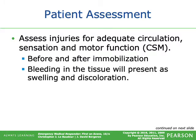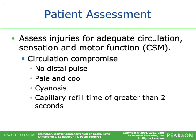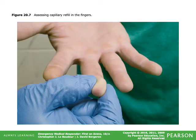Patient assessment related to trauma involves assessing injuries for adequate circulation, sensation, and motor function — before and after immobilization — to confirm nothing has changed. Bleeding in the tissue presents as swelling and discoloration. It's good practice to mark pulse points so you know exactly where the pulse should be when reassessing. Signs of compromise include no distal pulse, pale and cool extremity, cyanosis, and capillary refill time greater than two seconds.